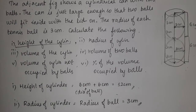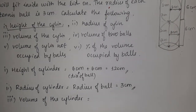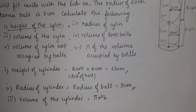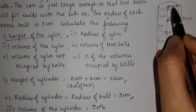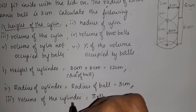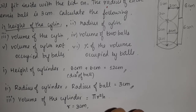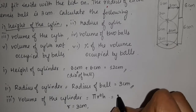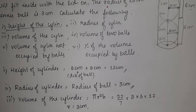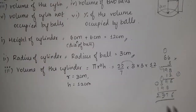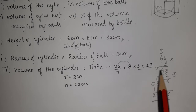The third question is the volume of the cylinder. The volume of the cylinder is formed by π r² h. We have the radius value of 3 cm and the height value of 12 cm. Substituting the formula: 22/7 into r² — that is 3 into 3 — into h, which is 12. Multiplying: 22 into 3 is 66, 66 into 3 is 198, and 198 into 12 gives 2376.